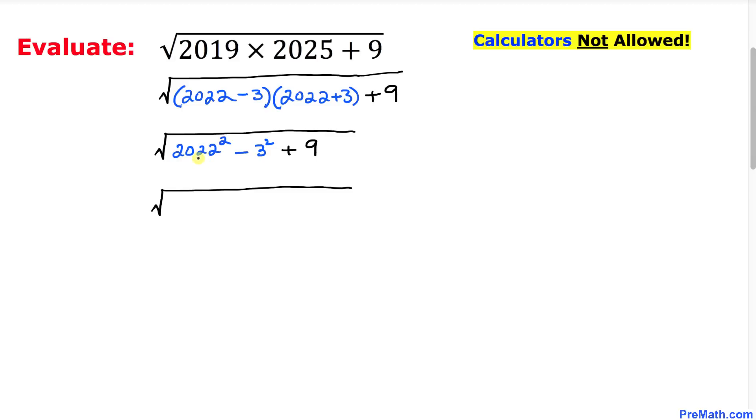Now let's simplify furthermore. I'm going to leave this 2022 squared. Minus 3 squared could be written as 9, and then plus 9. Now we can see that positive 9 and negative 9, they are gone.